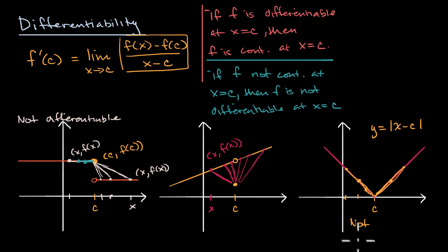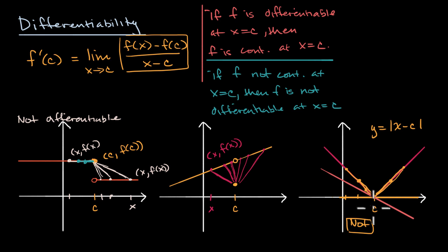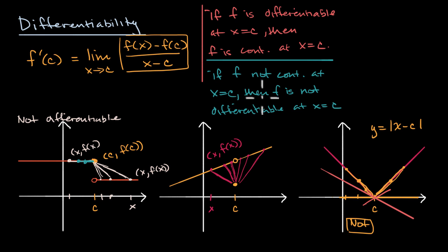So this function is not differentiable at c. Intuitively, we think of the derivative as the slope of the tangent line, but at this corner you could draw infinitely many tangent lines. The big takeaway: differentiability implies continuity — equivalently, not continuous means not differentiable. But continuity does not imply differentiability. This absolute value function is a continuous function at c that is not differentiable at c.